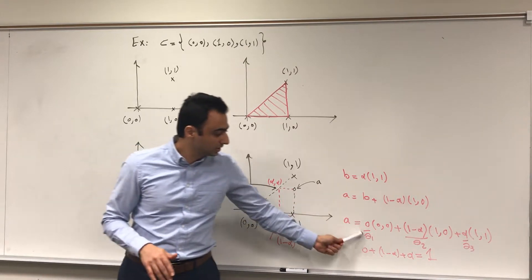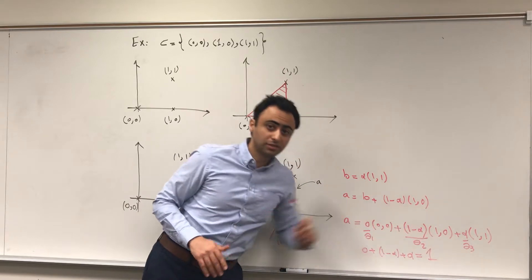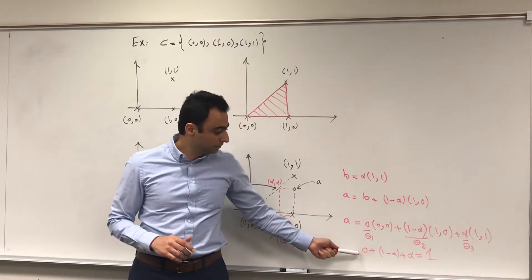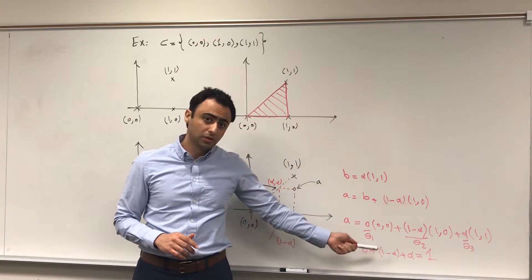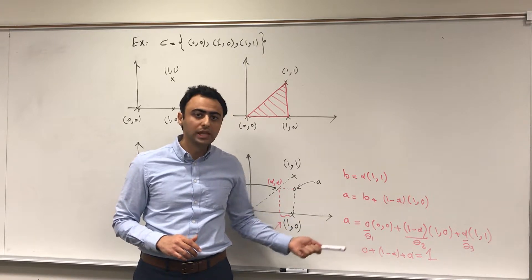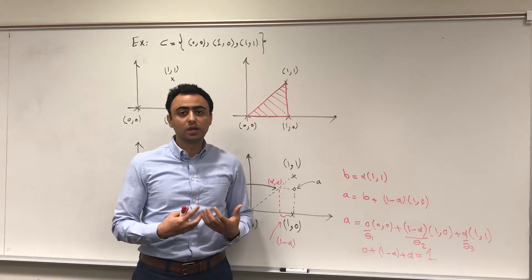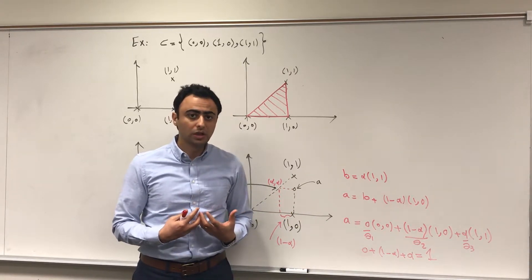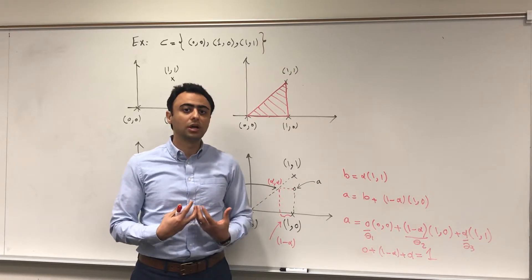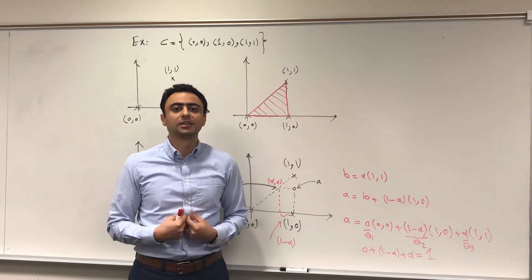If you look at the coefficients theta1, theta2, and theta3, you can see that their summation is equal to one. We have a convex combination of three points in R², which gives us the convex hull of our set.